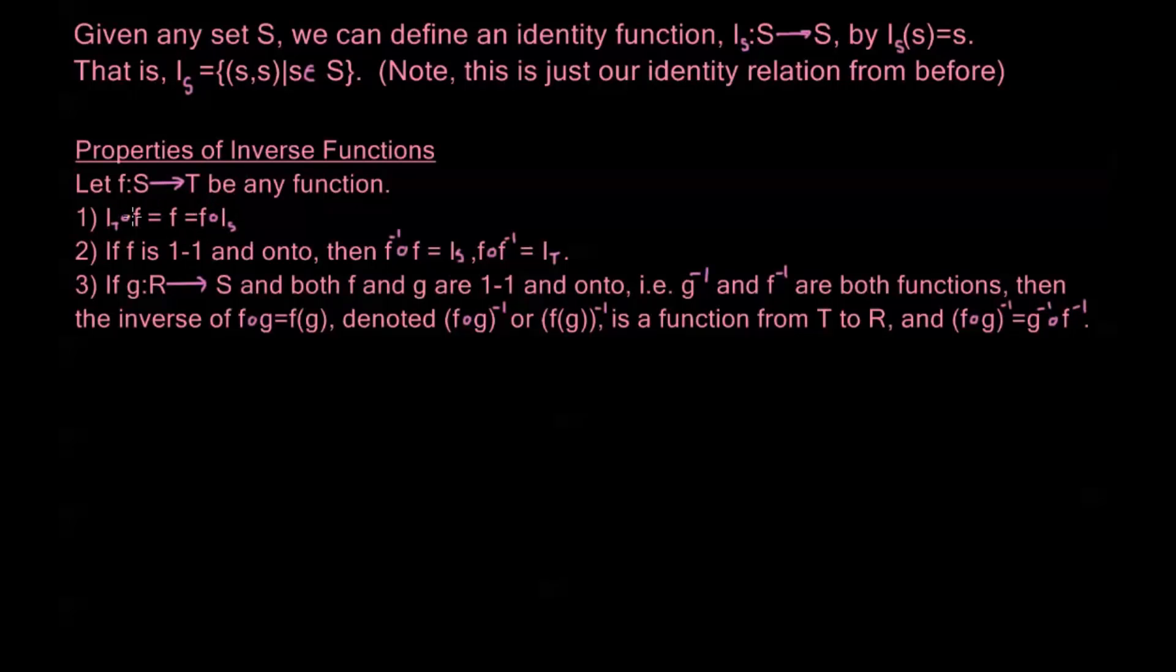Suffice it to say that if we have composition of these identity functions, then we can cancel it in this sense. If we end up getting something that turns into an identity function on T, then we can kind of cancel it and drop it to F.